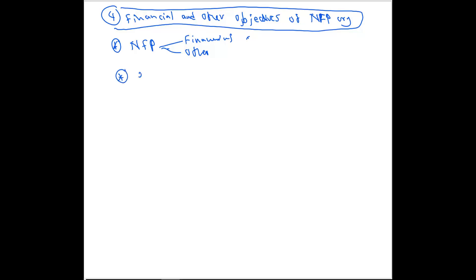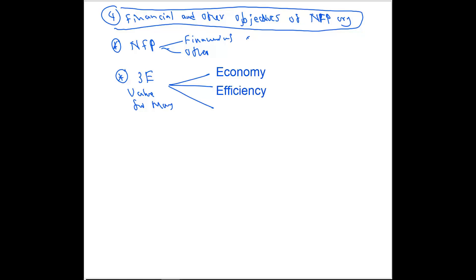Next, you should know the three E concept, which is the value for money concept. The three E's are: Economy — not overspending, spending the correct amount for the correct thing. Efficiency — getting maximum output from whatever spending you are doing. Effectiveness — from whatever money you are spending, you should be able to achieve your objectives and targets.